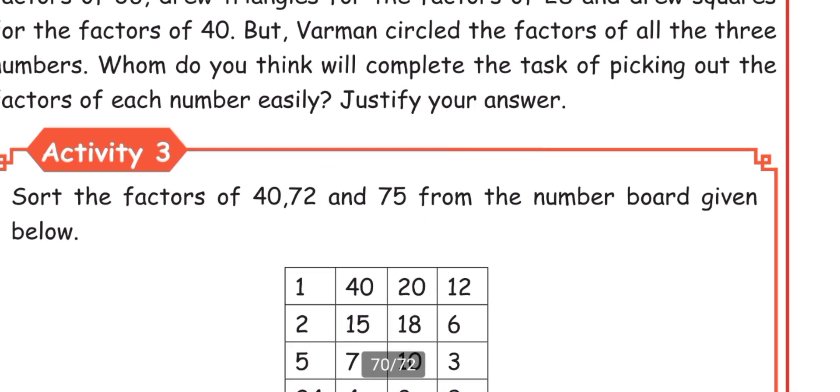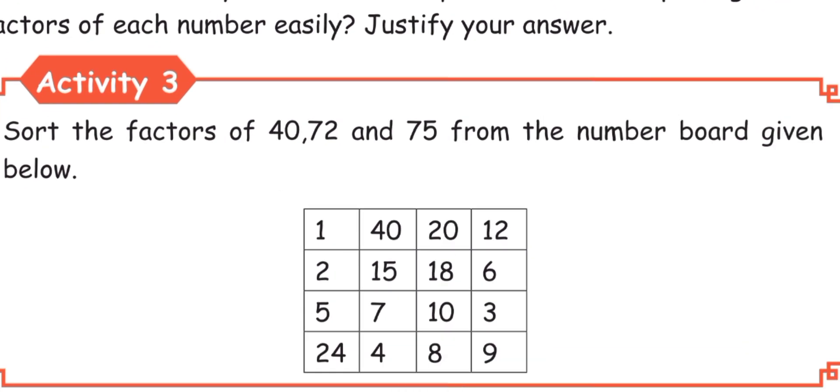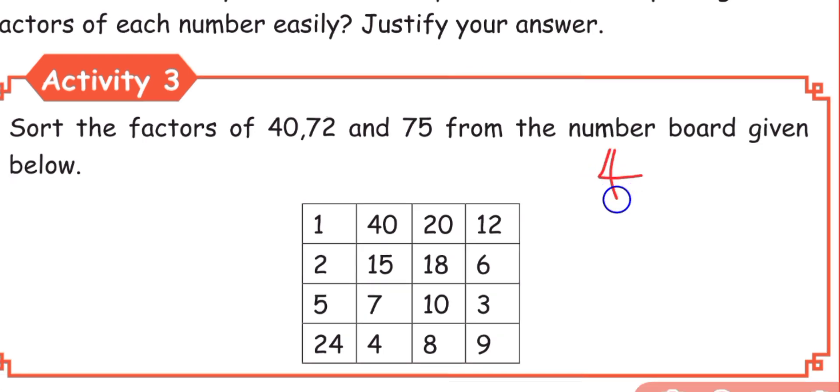Next, Activity 3. Sort the factors of 40, 72, and 75 from the number board given below. This number board is given below. We will write the factors of 40, 72, 75.